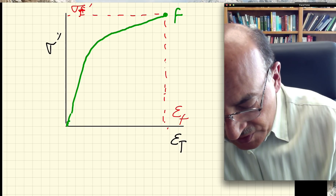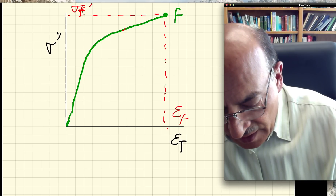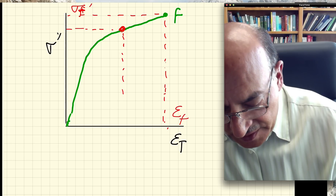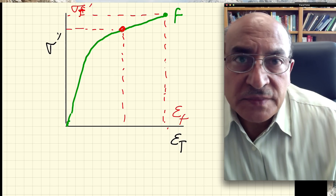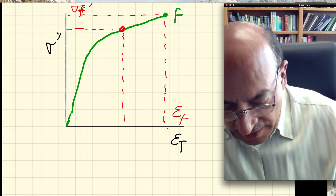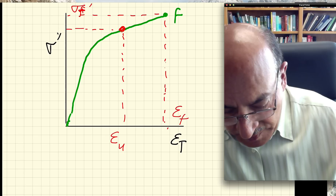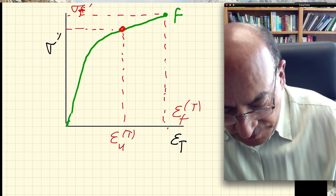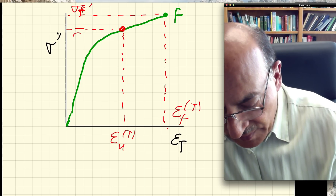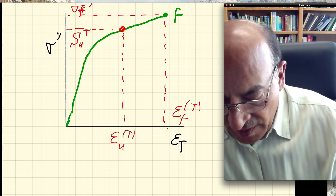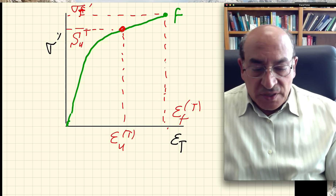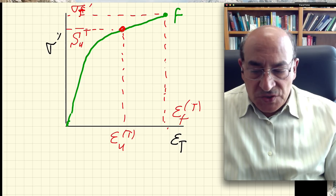The ultimate point from the engineering curve — corresponding to the maximum engineering stress S_u — maps to a point in the middle of the true curve, at coordinates (ε_u_true, S_u_true). This corresponds exactly to the peak point on the engineering stress-strain curve.